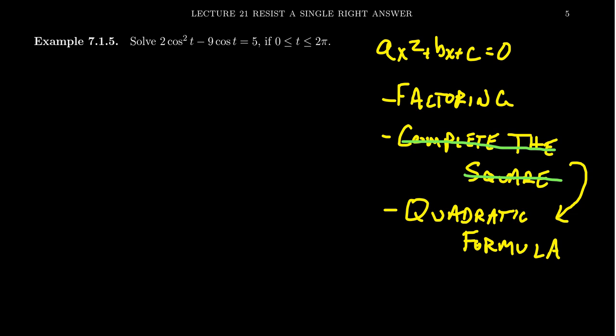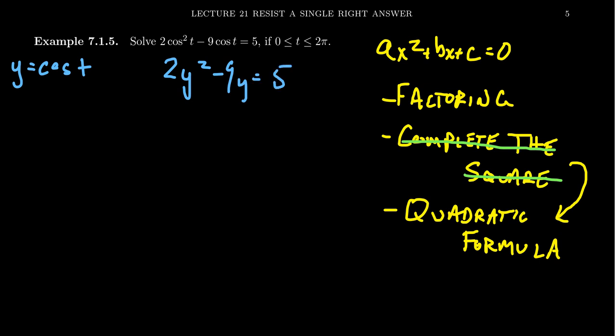I'm going to show you two examples. In the first one, I'll show how to solve a quadratic trigonometric equation using factoring, and on the next one we'll use the quadratic formula. Let's solve 2cos²(t) − 9cos(t) = 5. This can feel overwhelming, so if necessary, make the substitution y = cos(t). Then the equation looks like 2y² − 9y = 5, and we can deal with this algebraic equation without worrying about the trigonometric expression for a moment.